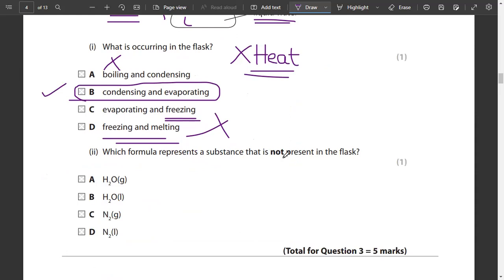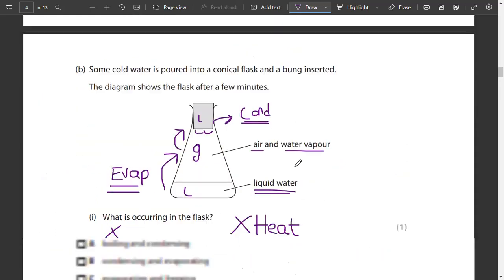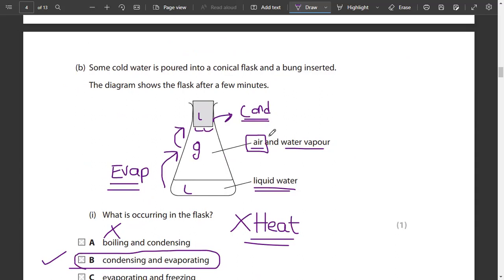Which formula represents a substance that is not present in the flask? Is H2O gas present? Yes. Is H2O liquid present? Yes. Is N2 gas present? It is present. Why do I know that N2 gas is present? Can you see air?